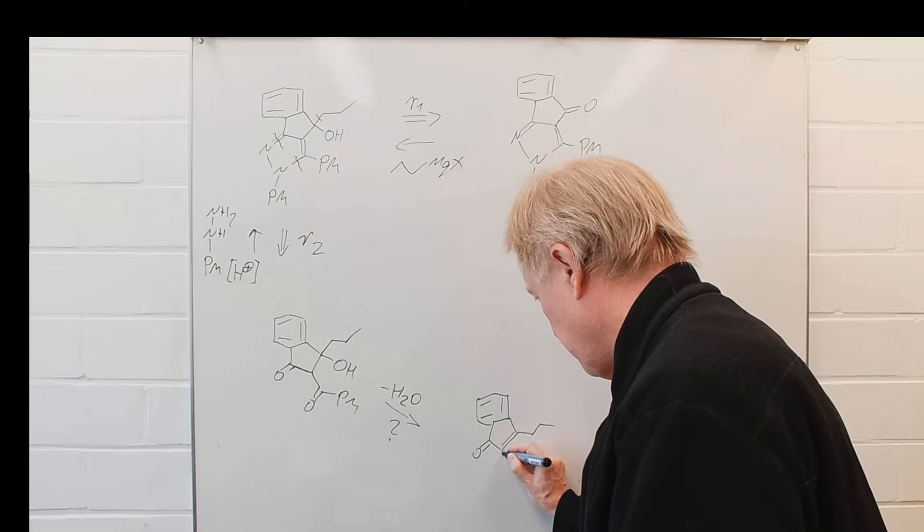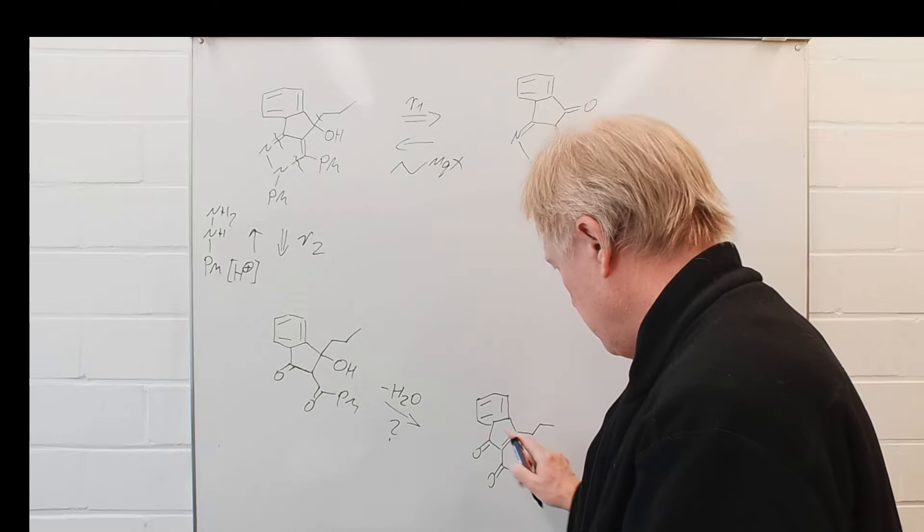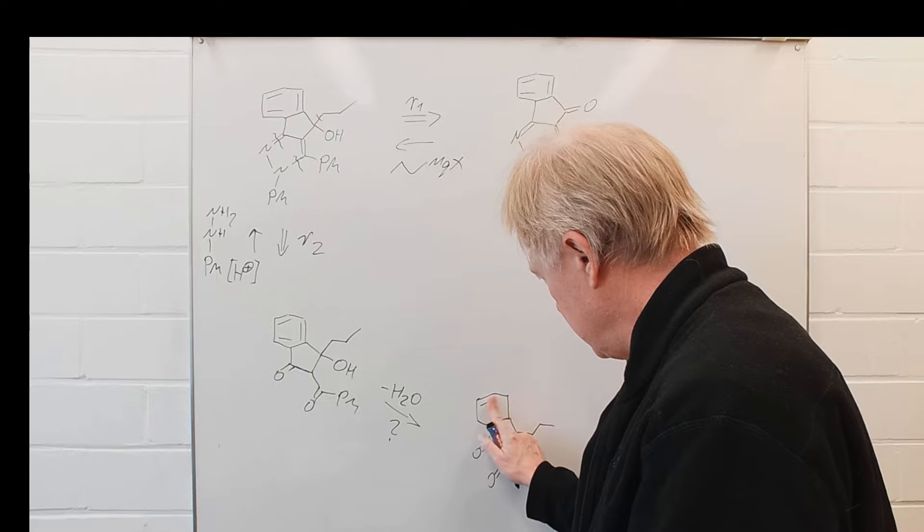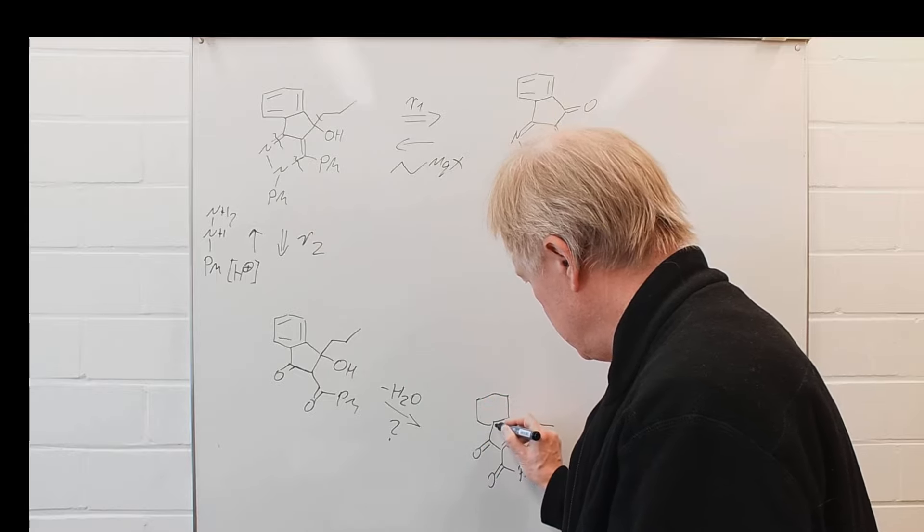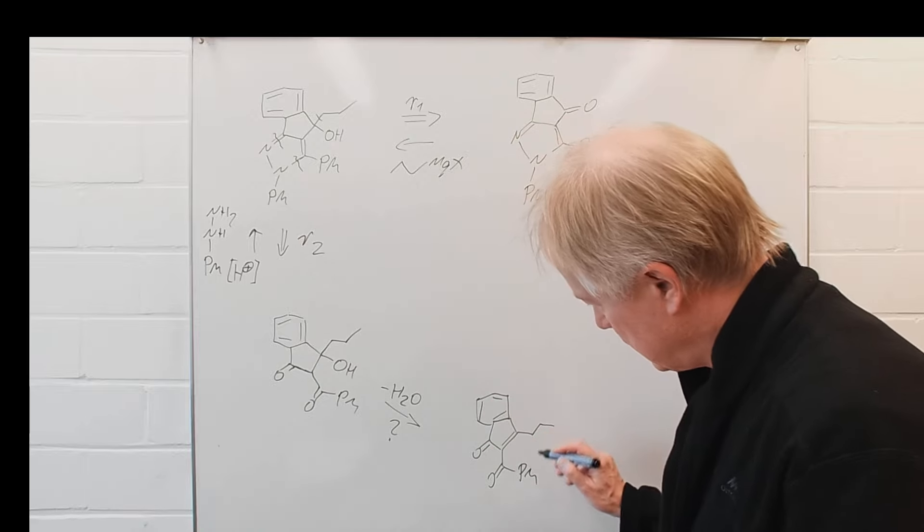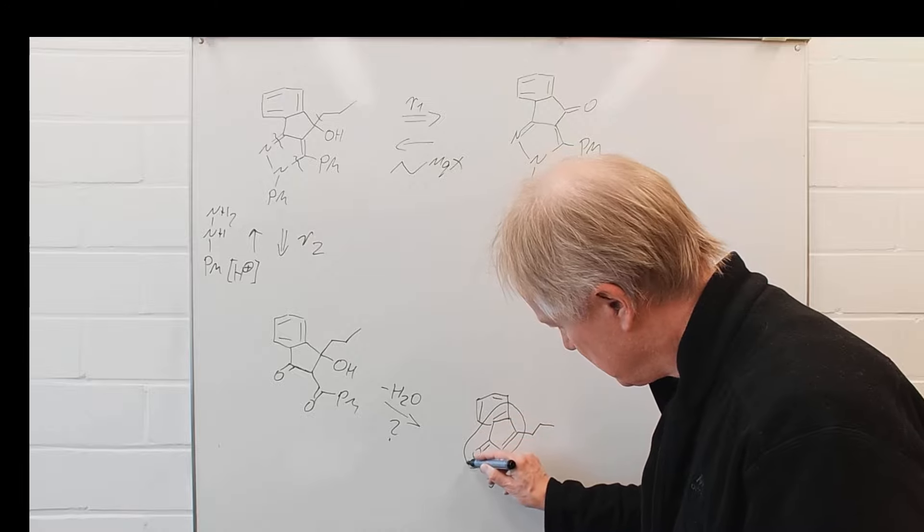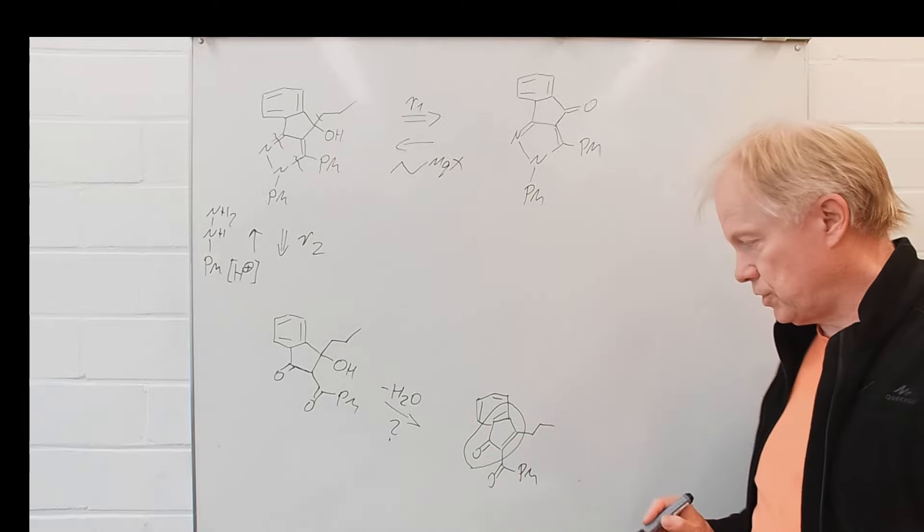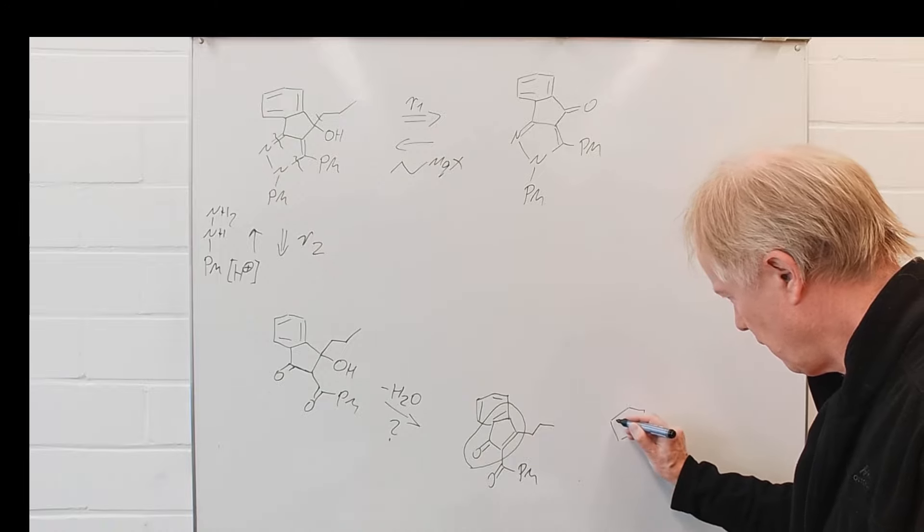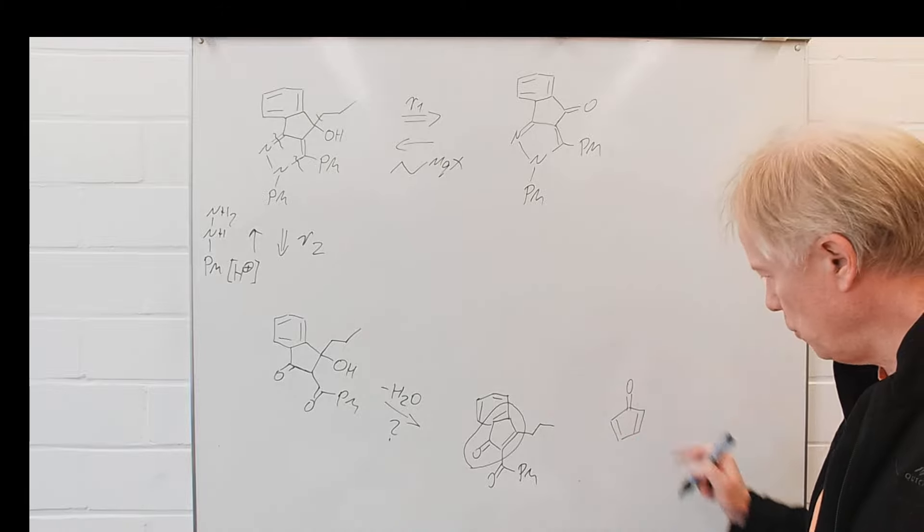But let me place these double bonds slightly different here, there and there. In that case, we see this moiety, and what kind of moiety is that, is cyclopentadienone.